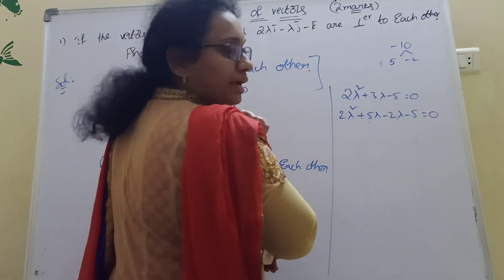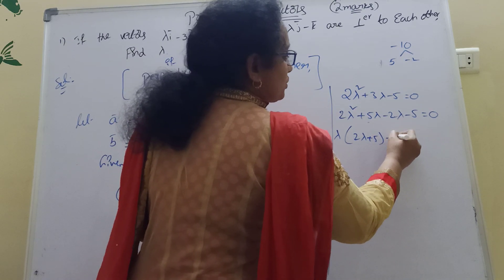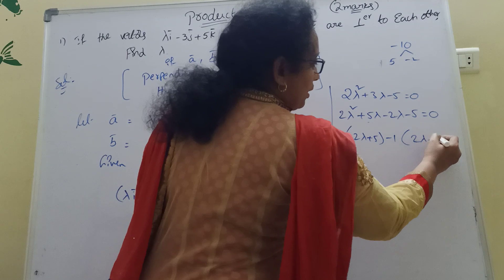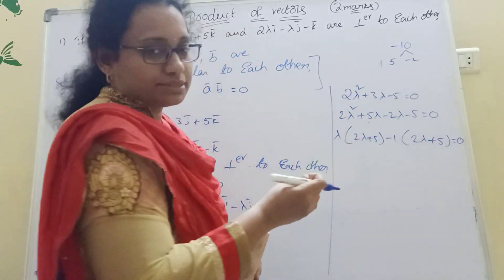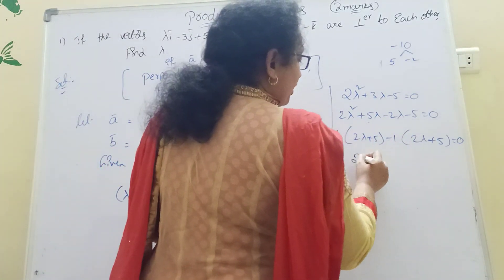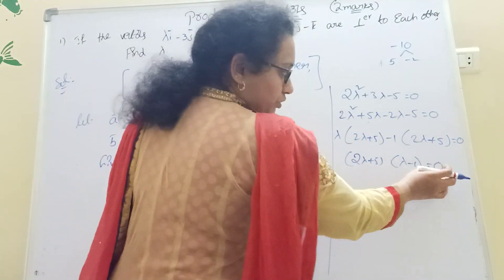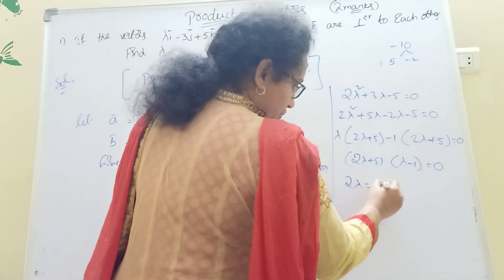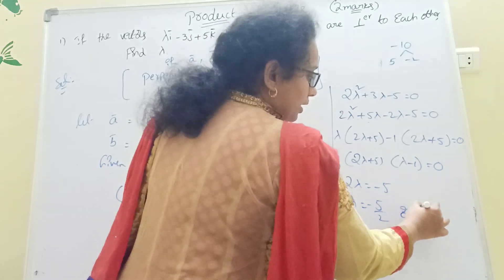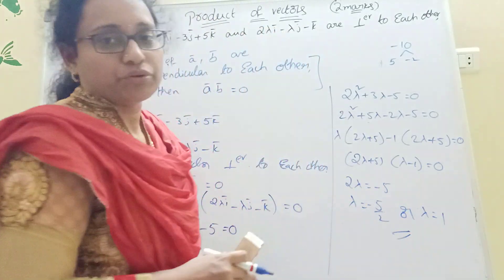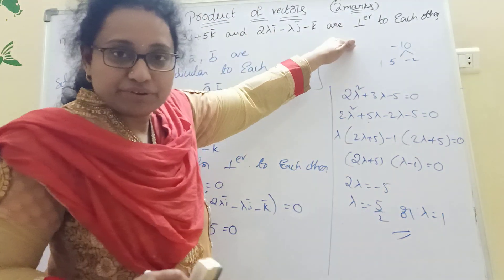Factorizing: lambda is common in the first two terms giving lambda(2 lambda plus 5), and minus 1 common in the last two giving minus 1(2 lambda plus 5), so (2 lambda plus 5)(lambda minus 1) equal to 0. Therefore, 2 lambda equal to minus 5, giving lambda equal to minus 5 by 2, or lambda equal to 1. The quadratic gives two values for lambda.